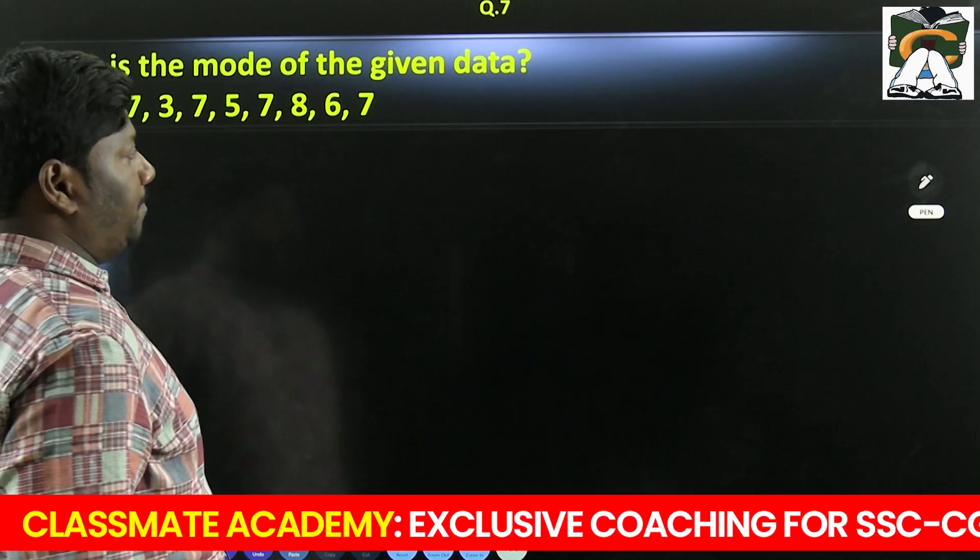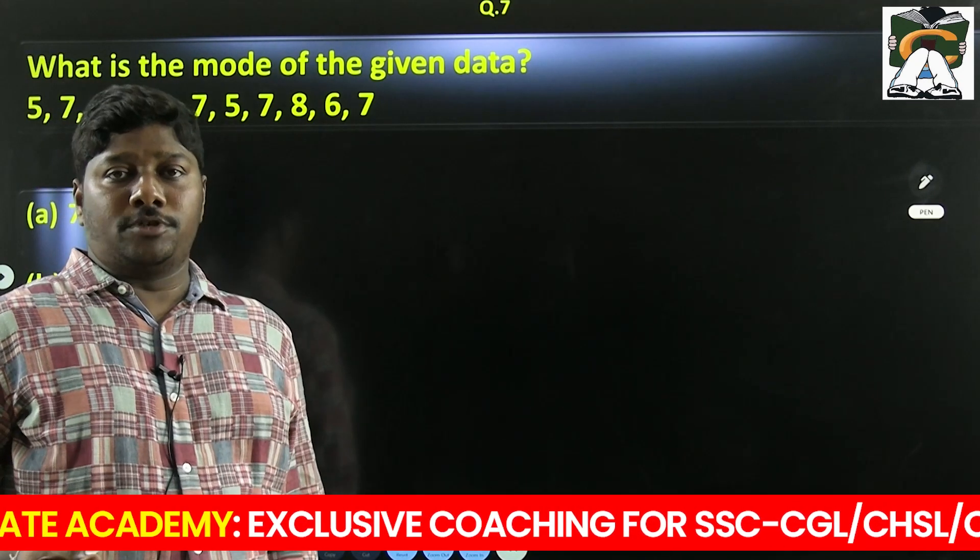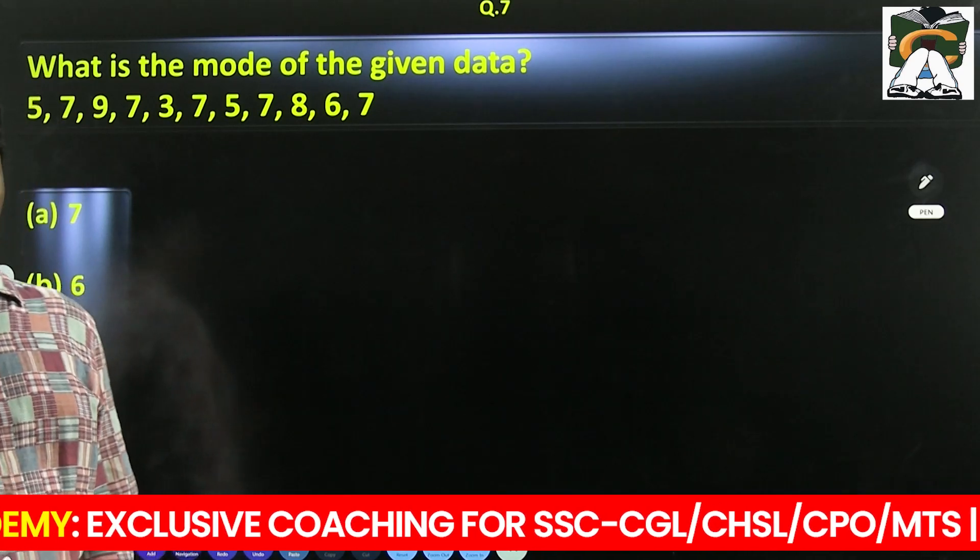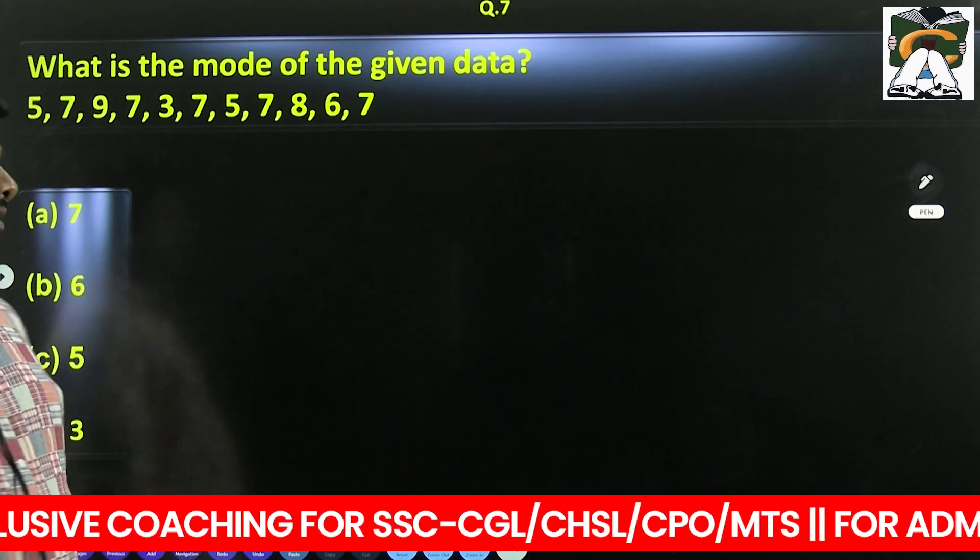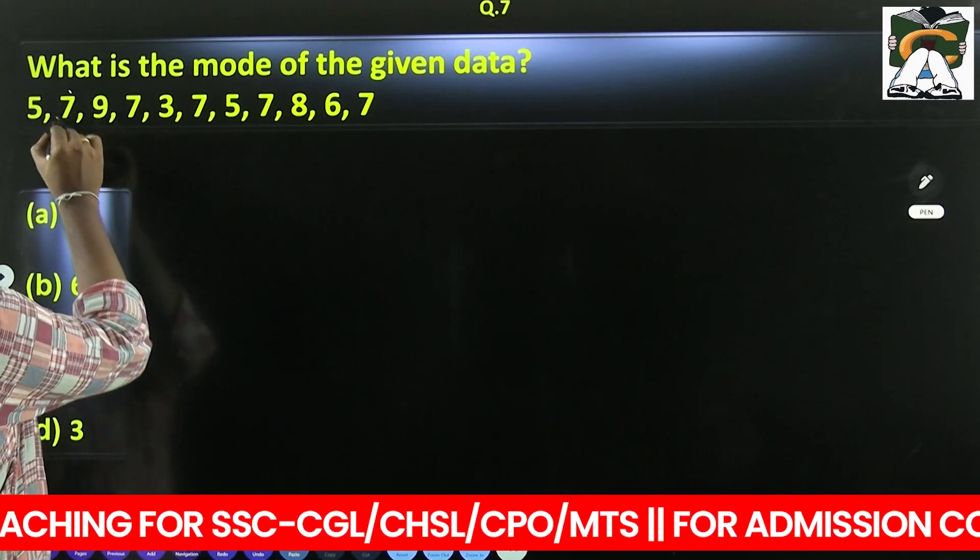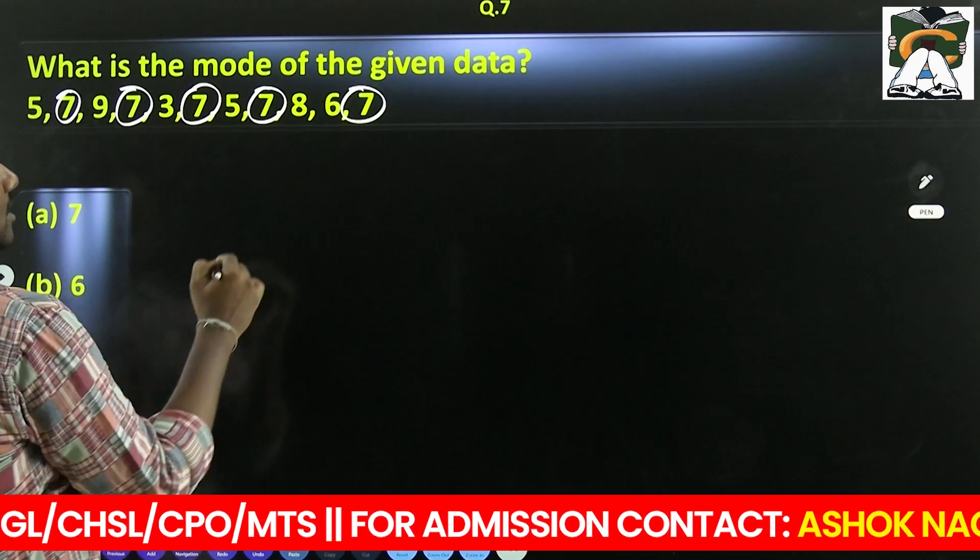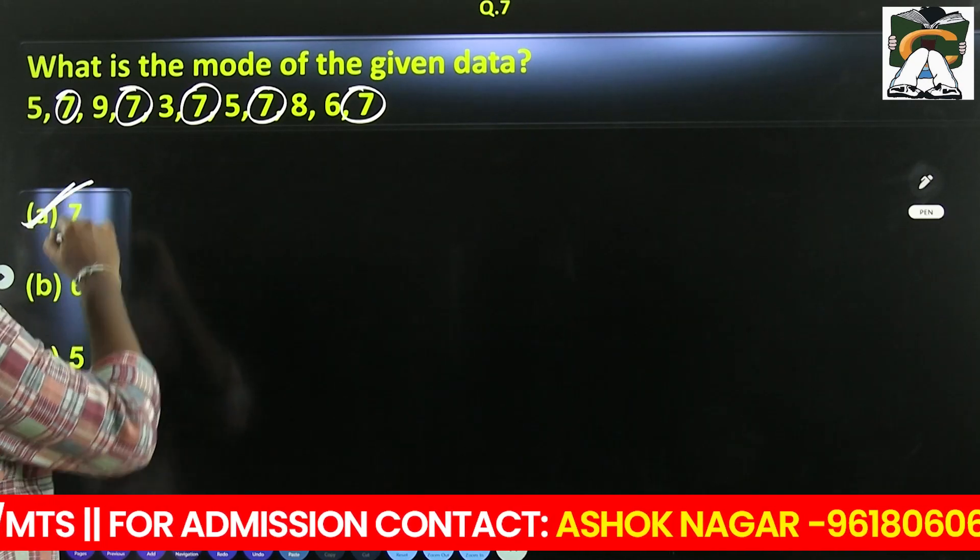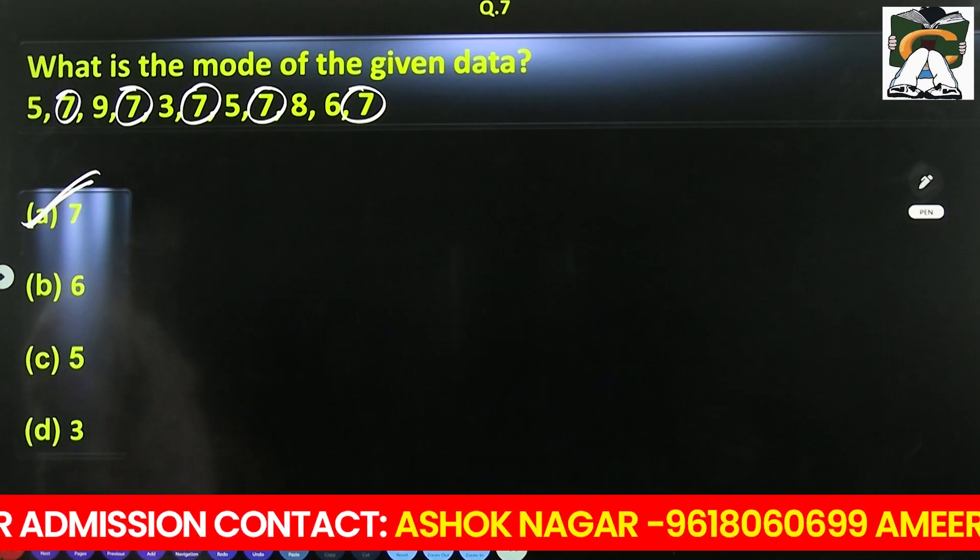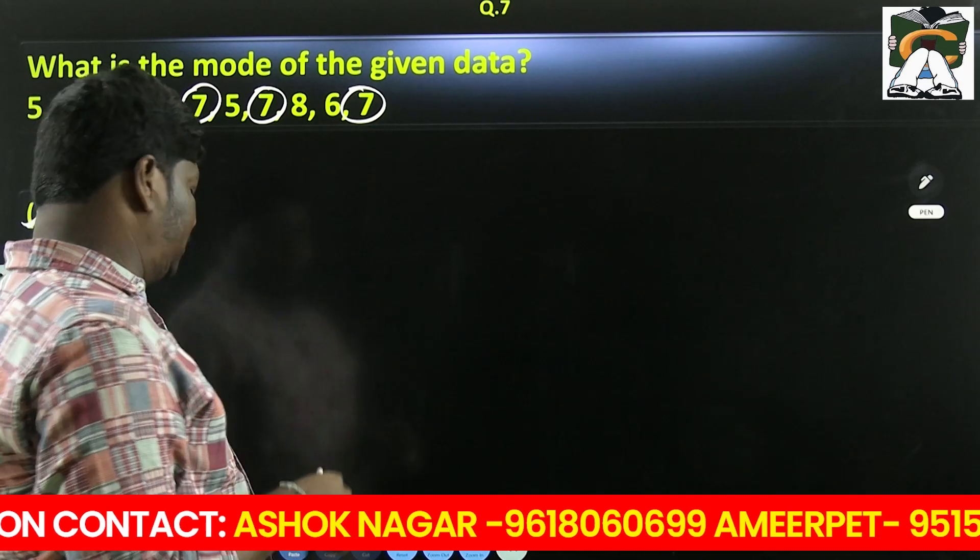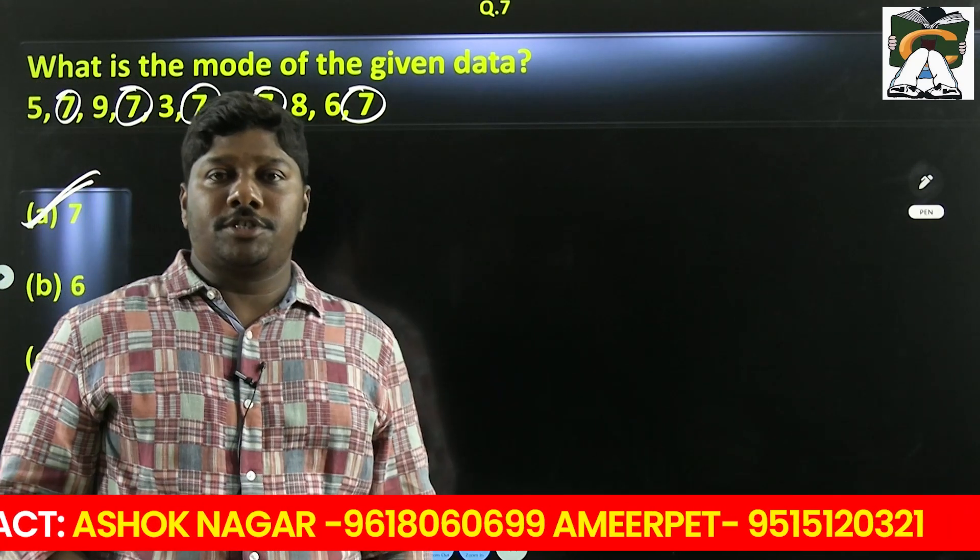What is the mode of the given data? Mode is the most repeating observation or most frequently occurred observation. Looking at the data, 7 appears 5 times - 7, 7, 7, 7, 7. Since 7 came 5 times, directly by looking at it you can say 7 is the mode of the data. That's all the questions we have.